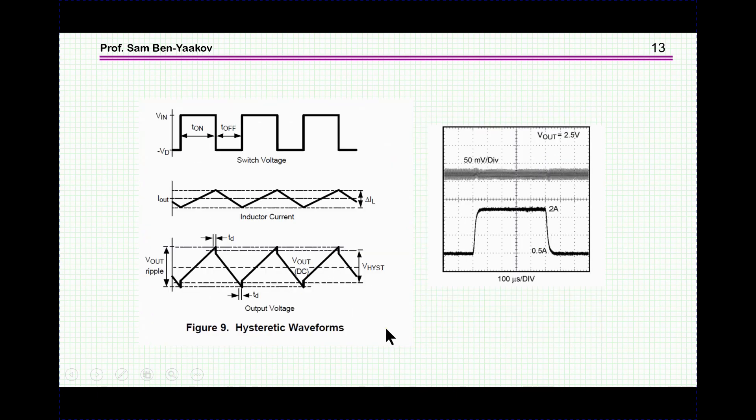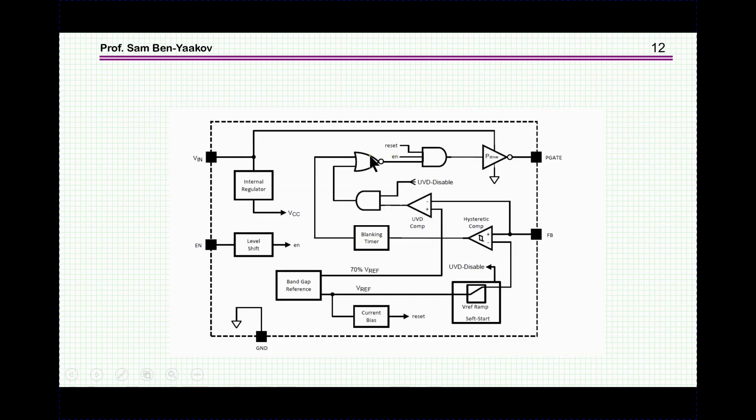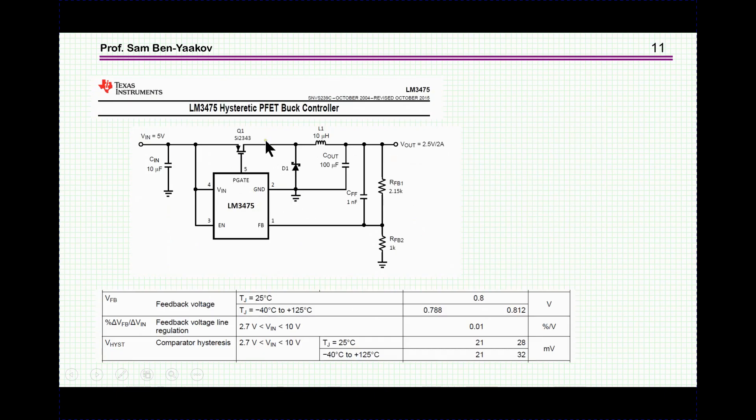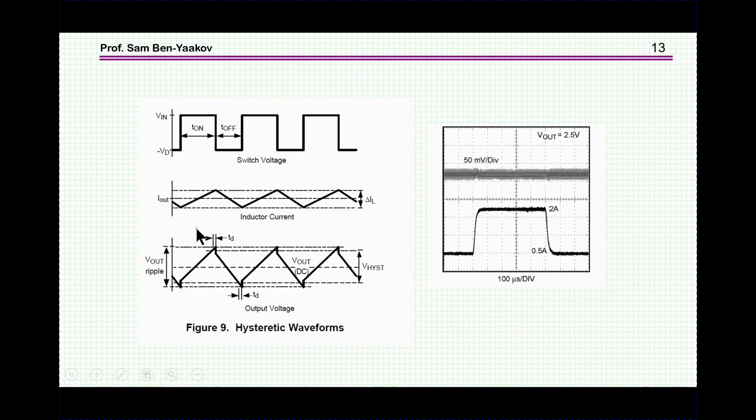And here are some waveforms from the datasheet. These are not measured waveforms, these are just drawn just to see the concept. We see here the sort of switch point, we see the voltage. There is a diode there so it's minus voltage drop on the down to V_in. This is V_in minus voltage drop of the diode. And then we have the inductor current going up and down in a triangular waveform. And here is what I've already shown, this is the straight line, this is the jump, and this is going down.